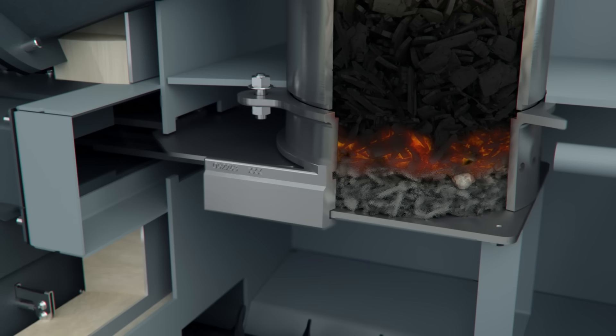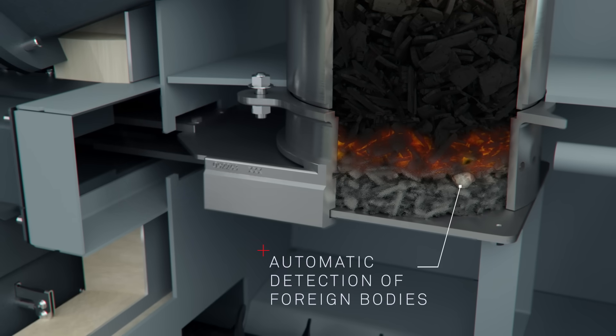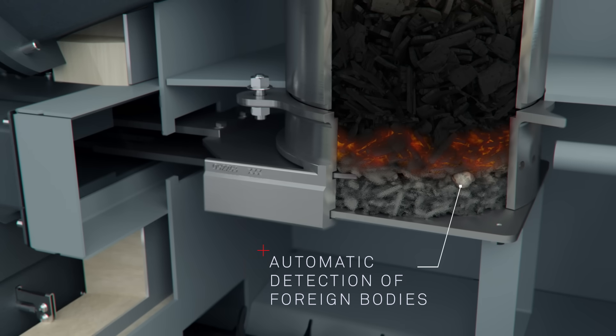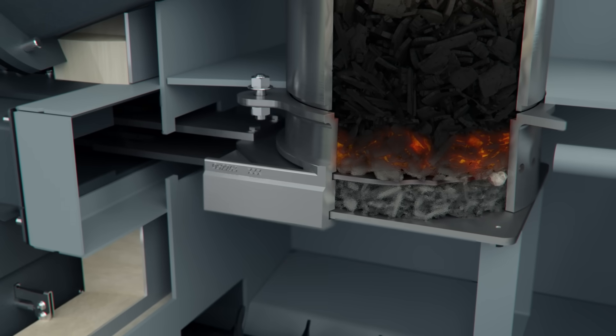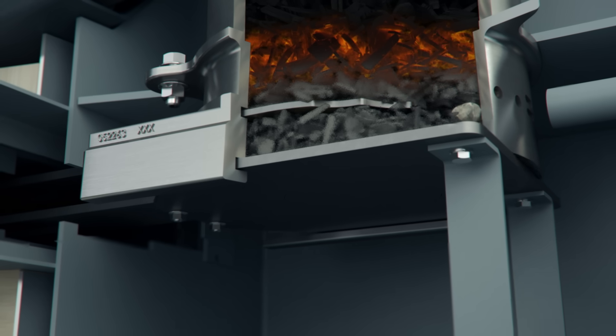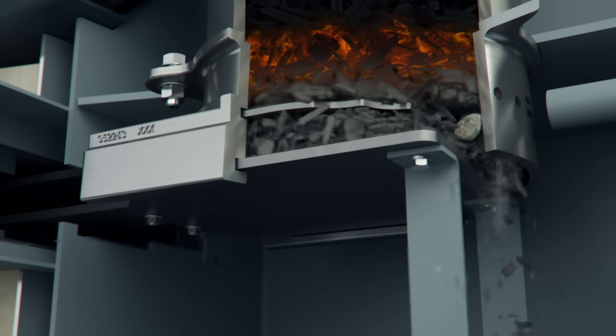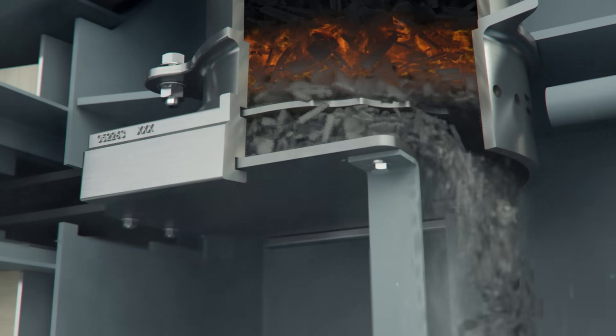The PuroWin automatically detects when there is a foreign body in the ember bed or layer of ash. The ember bed slide moves into the combustion chamber as far as possible. The ash removal plate opens and the foreign body can drop down along with the ash.